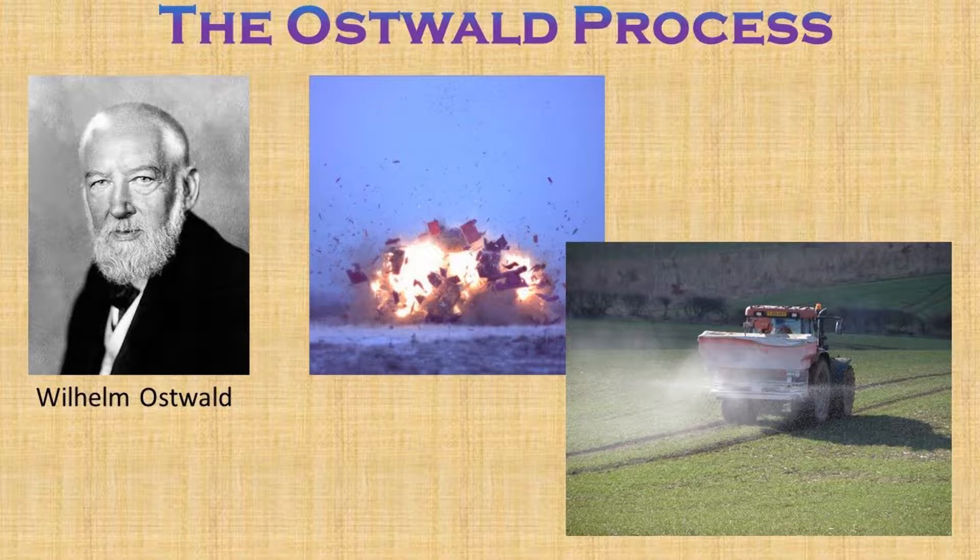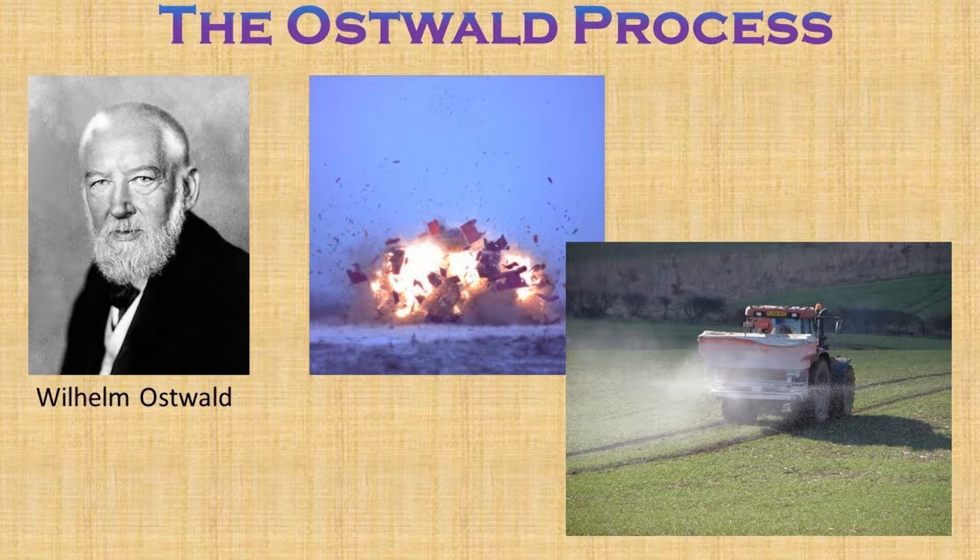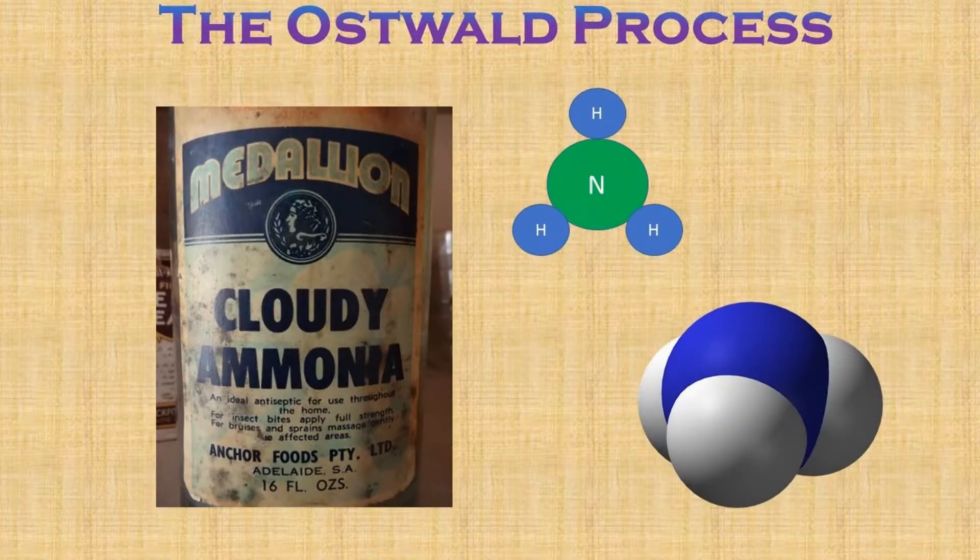The process that bears his name was developed by Wilhelm Ostwald in 1902. The actual chemistry had been developed much earlier but was of only academic interest as there was no significant source of ammonia available. That was all to change with Haber and Bosch's development of their process for commercially producing ammonia, the basic raw material of this process.